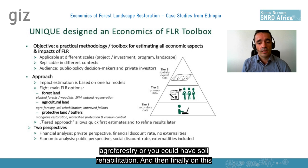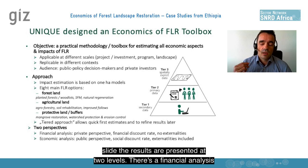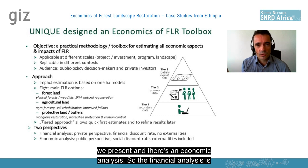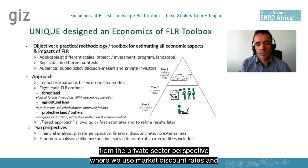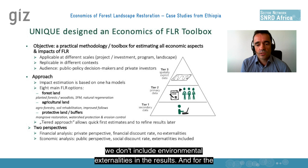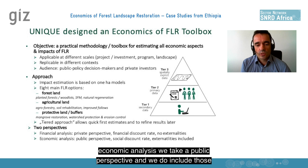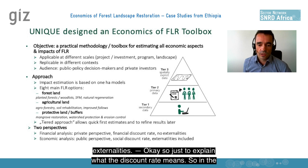The results are presented at two levels: a financial analysis and an economic analysis. The financial analysis is from the private sector perspective, where we use market discount rates and we don't include environmental externalities in the results. For the economic analysis, we take a public perspective and we do include those externalities.